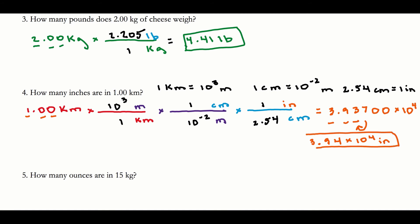Let's make sure this answer makes sense. One kilometer is a pretty decent distance — a thousand meters. Does it make sense that the number of inches would be a very large number like 10 to the fourth? Yes, because the inch is very small compared to a kilometer, so that answer definitely makes sense.